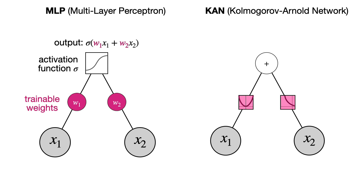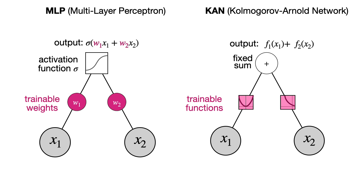On the right, in a KAN, the opposite happens. The output is going to be f1 of x1 plus f2 of x2. The sum is always fixed — I like to imagine it as a coefficient of 1 on both terms. The trainable part of the network is the functions f1 and f2, which can be anything. The output is f1(x1) plus f2(x2).